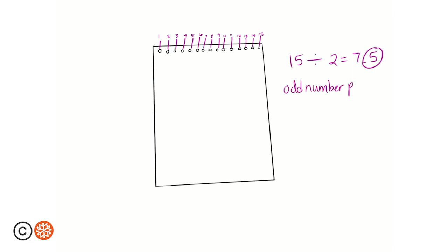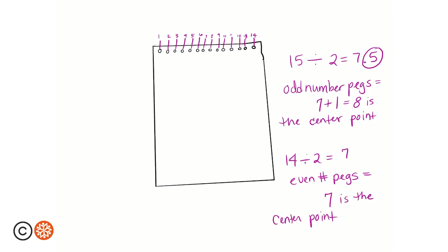If you have an odd number, you will end up with a number that is 0.5. This means a half number. So the middle of your base is one plus the number before the 0.5 integer. If you ended up with an even number, that's okay. Just use that number as your center point.